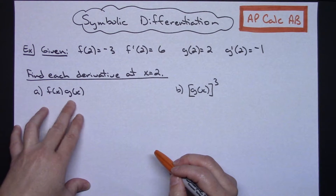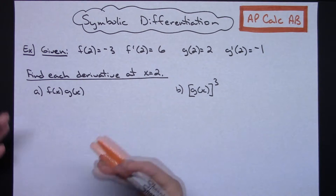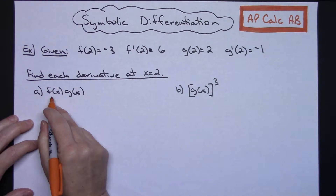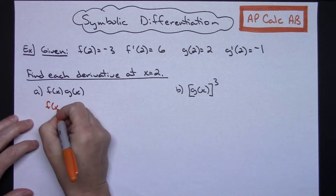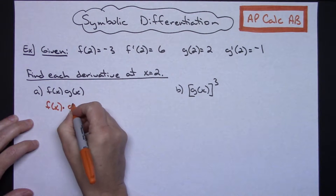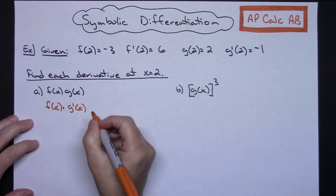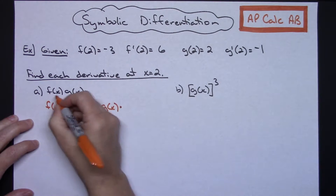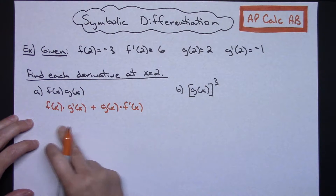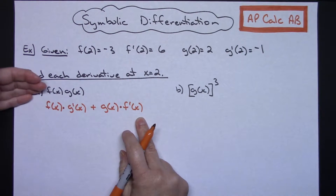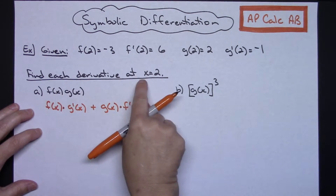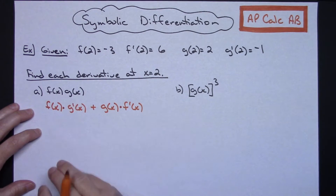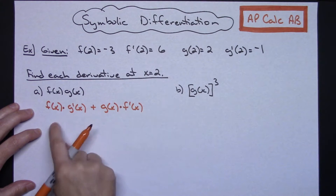It's two functions being multiplied, so they're wanting you to see if you understand the product rule for taking the derivative. We take the first function and leave it alone, and multiply that times the derivative of the second function — we can show that by g prime — and then we add that to the second function, g(x), multiplied times the derivative of that first function. They're just wanting you to implement the product rule. Now I want the derivative at 2, so now that I've calculated the derivative as best I can with only knowing g(x) and f(x), I can plug 2 in.